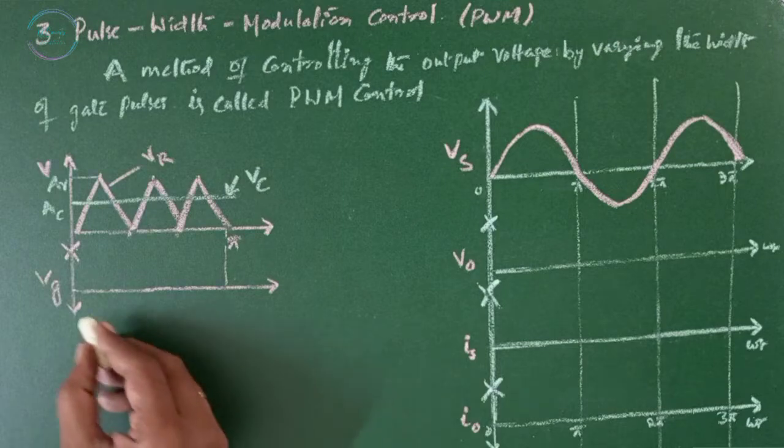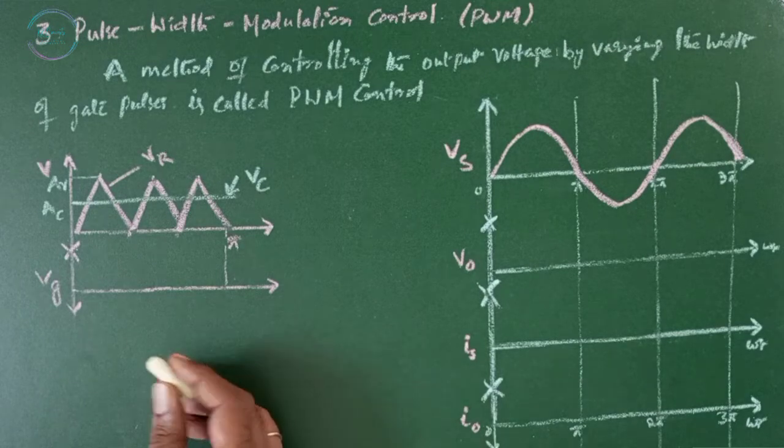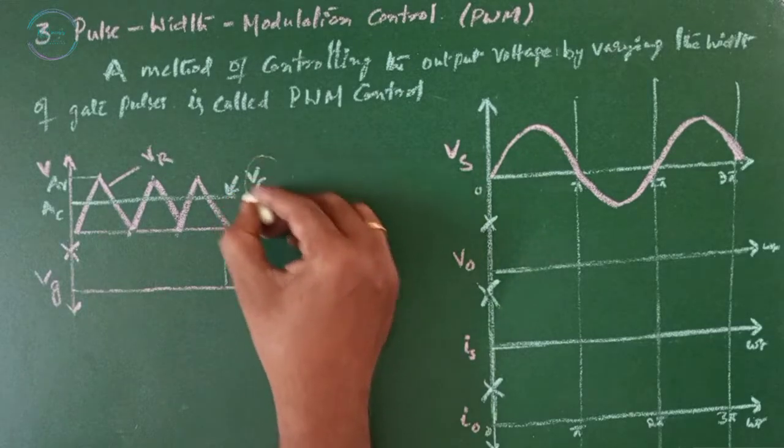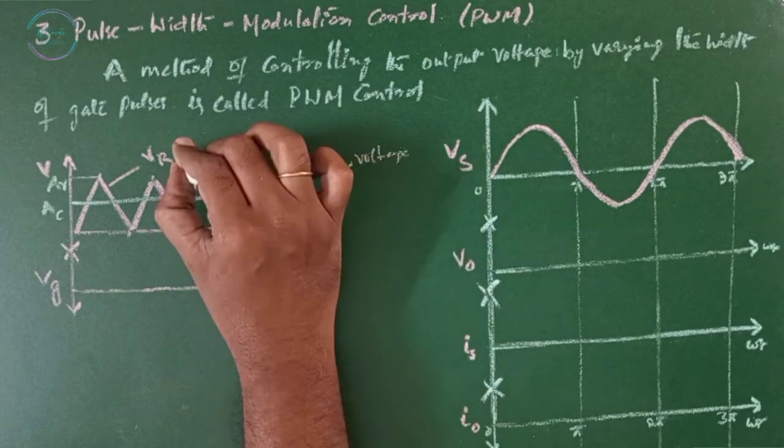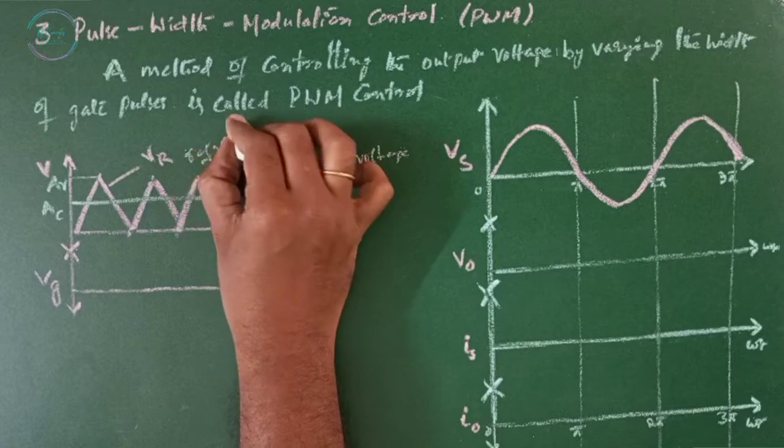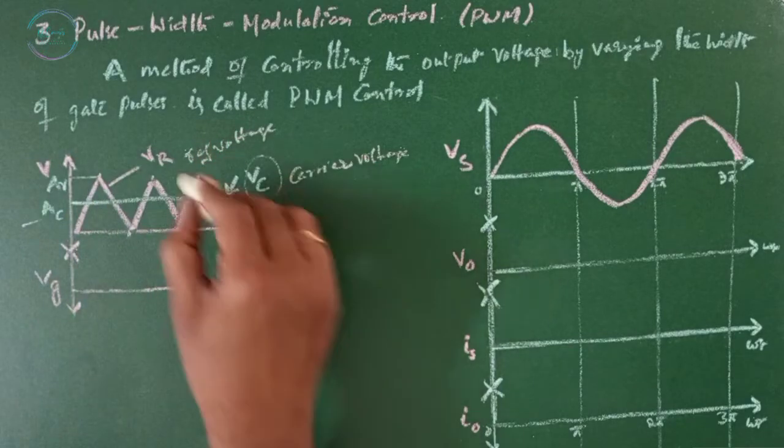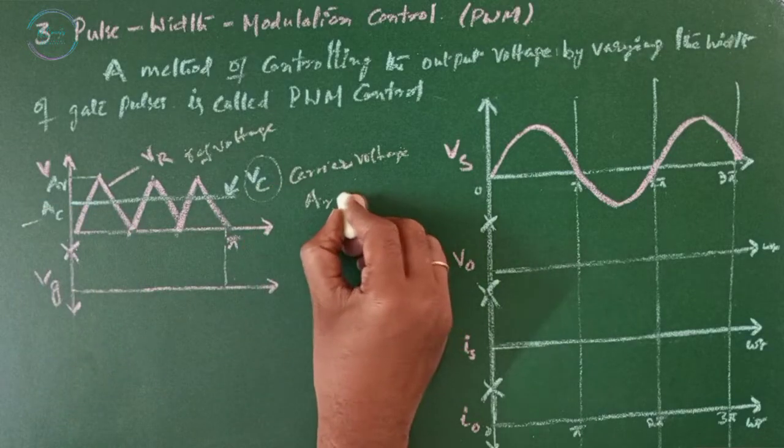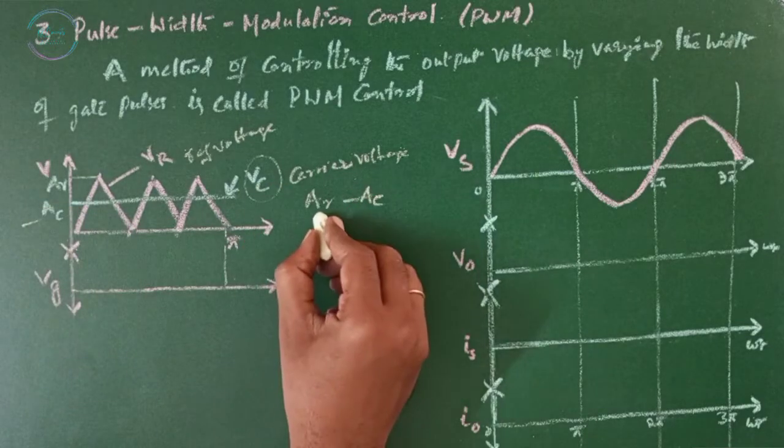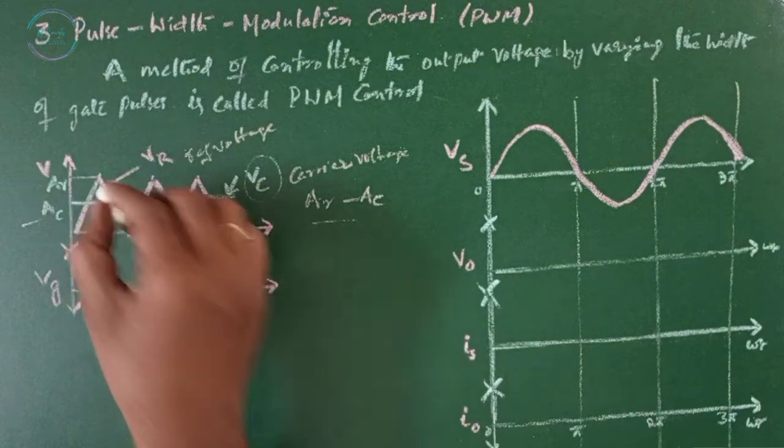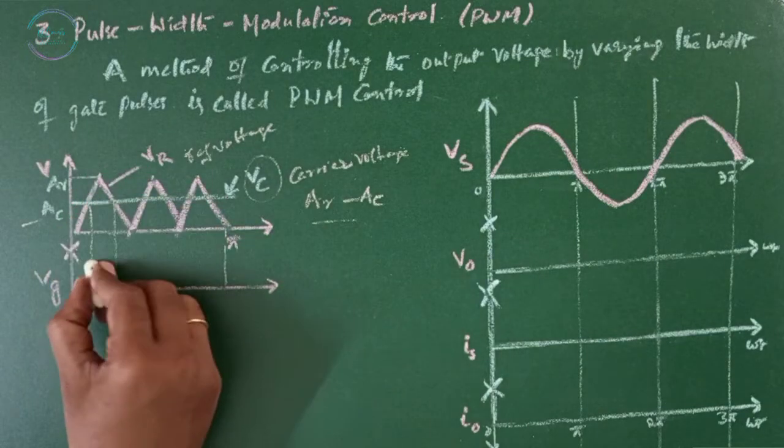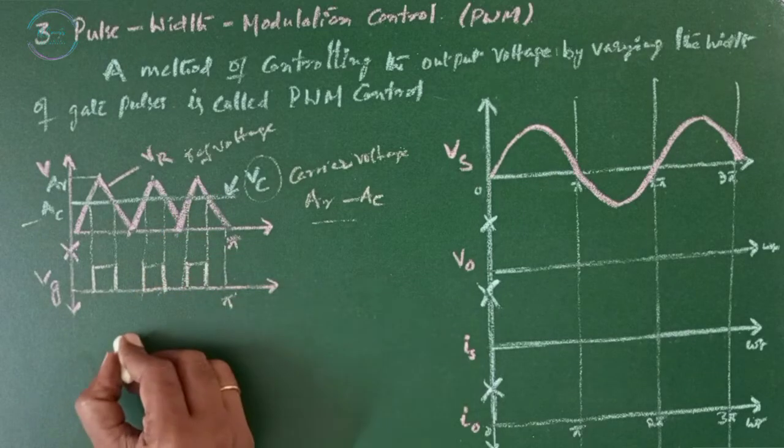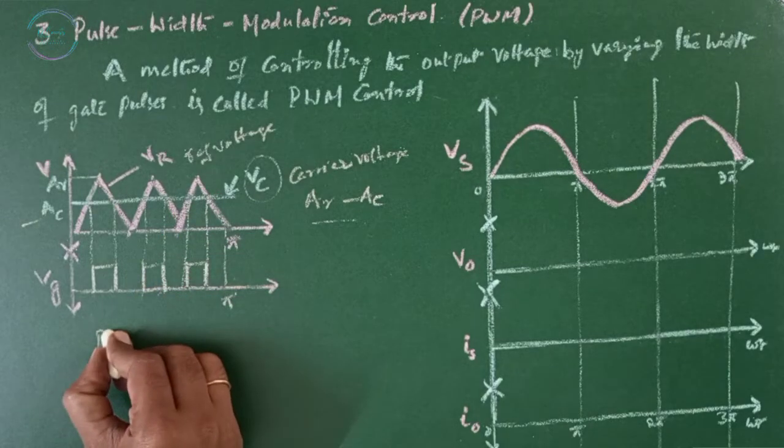In this, gate pulse is generated by comparing triangular waves with a DC signal, where this is carrier voltage, this is reference voltage. The maximum value of reference voltage is AR and the maximum value of control voltage is AC. So when you compare this, you will be getting the AR minus AC which is nothing but this area as a signal. This is my gate pulse in the period of half cycle. This pulse width modulation control.